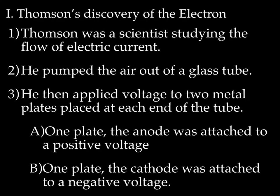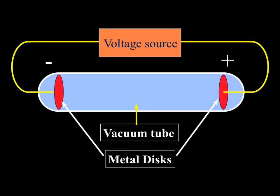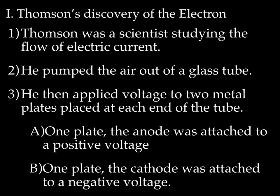We're going to start with the discovery of the electron. Thomson was a scientist that was actually not even studying atoms. He was studying electric current. He took a glass tube, a sealed glass tube. He pumped all the air out of it, so it's completely empty. It's a vacuum. There's nothing in it at all, not even air.